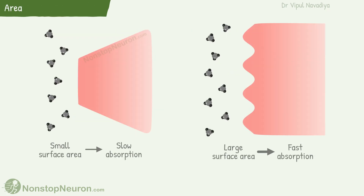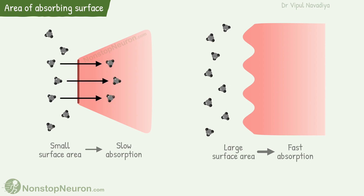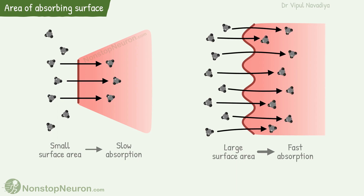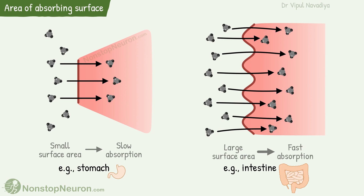The next factor is the area of the absorbing surface. Obviously, the smaller the surface area, the less the drug is absorbed, and the larger the surface area, the more the drug is absorbed. For example, the stomach has a smaller surface area compared to the intestine. This is one of the reasons why absorption from the stomach is slower than that from the intestine.